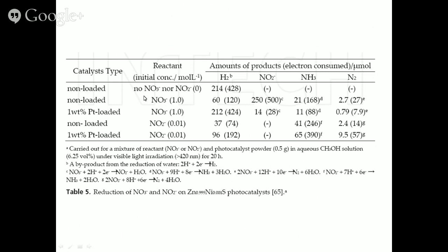Another possibility not yet discussed: this is not CO2 but nitrate. Nitrate can be reduced photocatalytically to nitrite and ammonia in aqueous medium or methanol medium. Just as we talk about photocatalytic reduction of CO2, it is also possible to do photocatalytic reduction of nitrates and nitrites to ammonia. The photocatalyst used here is some kind of nickel-substituted zinc sulfide catalyst.